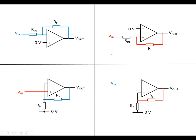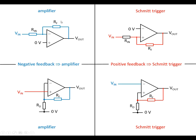Schmitt triggers: we're going to start off looking at four op-amp circuits. These two circuits have negative feedback — the output is fed into the inverting input — which means we've got an amplifier circuit. These others have the output fed into the non-inverting input, which means we've got positive feedback, which means it's a Schmitt trigger. So negative feedback means amplifier, positive feedback means Schmitt trigger. We then look at where the input goes: into the inverting input means inverting amplifier or inverting Schmitt; into the non-inverting input means non-inverting amplifier or non-inverting Schmitt.